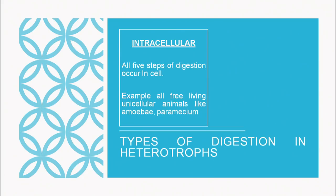What are the types of digestion in heterotrophs? It can be intracellular or extracellular. Intracellular means all five steps of digestion — ingestion, digestion, absorption, assimilation and egestion — take place inside the cell only. That is intracellular digestion.